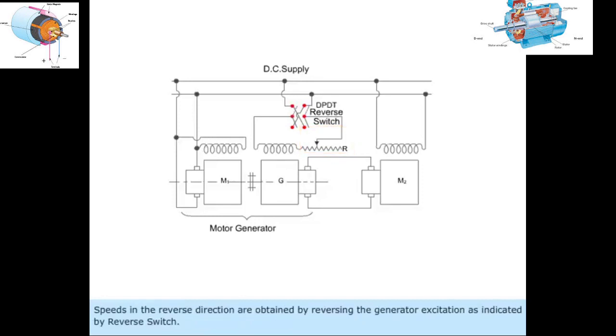Speeds in the reverse direction are obtained by reversing the generator excitation as indicated by the reverse switch.